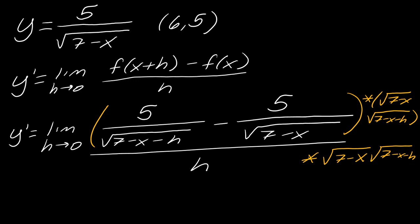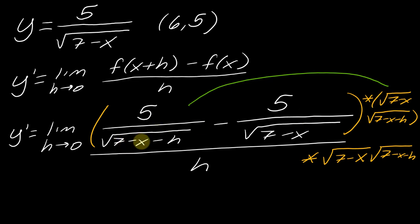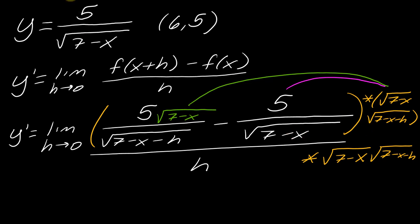Now if I think about what happens as I distribute these two fractions, just the denominators are going to clear. As I multiply by these two denominators, the square root of 7 minus x minus h is going to cancel out, so I'm just left with the square root of 7 minus x. And for the other fraction, the square root of 7 minus x cancels out, so I'm left with the square root of 7 minus x minus h. Also, both fractions have the five, so I want to pull the five out in front because it's just noise.